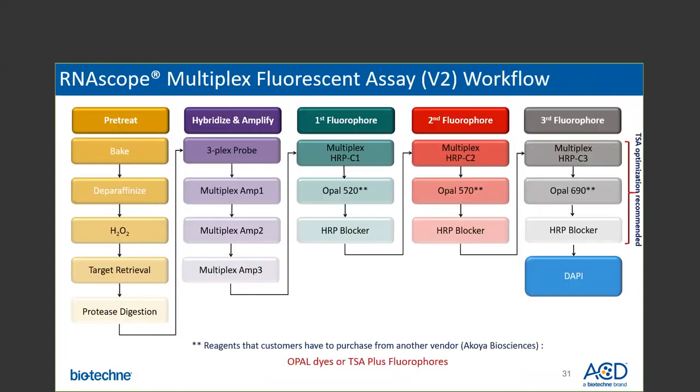For the multiplex fluorescent V2 assay, there are four major steps: sample pre-treatment, hybridization, amplification, and detection. In the V2 assay, during the detection process, the channels are developed sequentially after the amplification step. Unlike in the V1 assay where the fluorophores are conjugated to AMP4, in the V2 assay the TSA-based fluorophores are added separately during the detection steps. This offers flexibility to the user to visualize any target using the Opal dye of their choice. One important thing to note is that the V2 assay is TSA-based and requires purchase of Opal fluorophores from PerkinElmer or Akoya Biosciences.